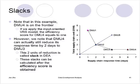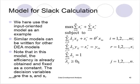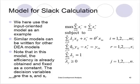So how do we calculate slacks? Looking at this model, let's look at the constraints first. In the input-oriented model, the constraints for all the inputs say the left-hand side with the lambdas is less than or equal to the right-hand side. What we do is introduce two sets of decision variables: one is SI minus, the other is SR plus. The first set is for the inputs and the second set is for the outputs. For the inputs, you add something to the left-hand side so it equals the right-hand side. On the output side, you subtract something from the left-hand side so it equals the right-hand side.